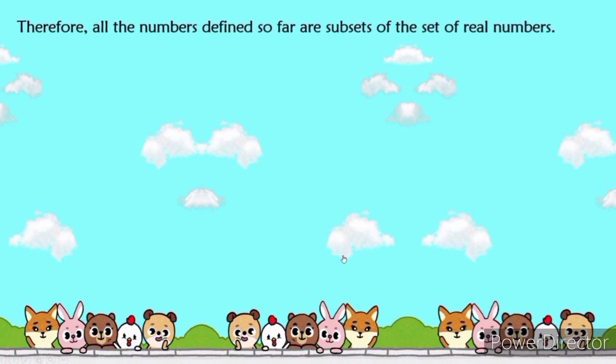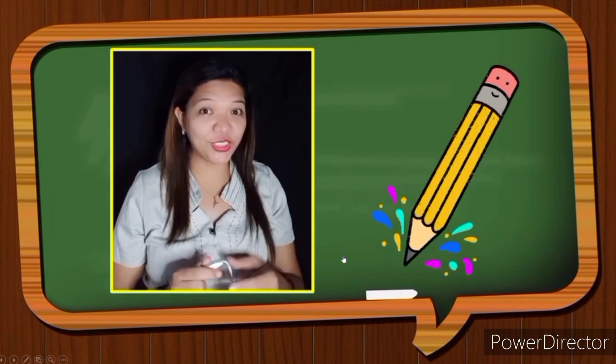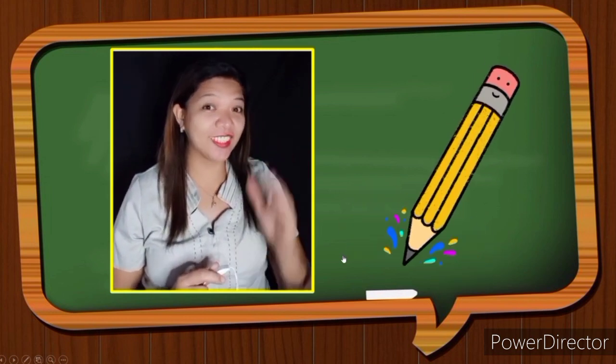Therefore, all the numbers defined so far are subsets of the sets of real numbers. Now look at our example. We have natural numbers, whole numbers, integers, rational and irrational numbers. Are you ready to answer your module? Good luck!